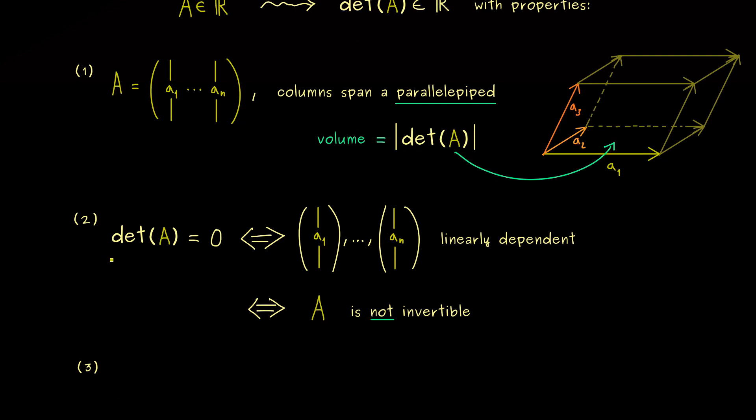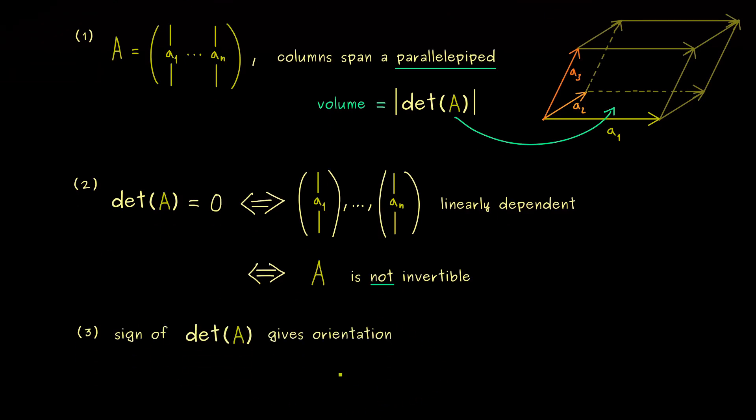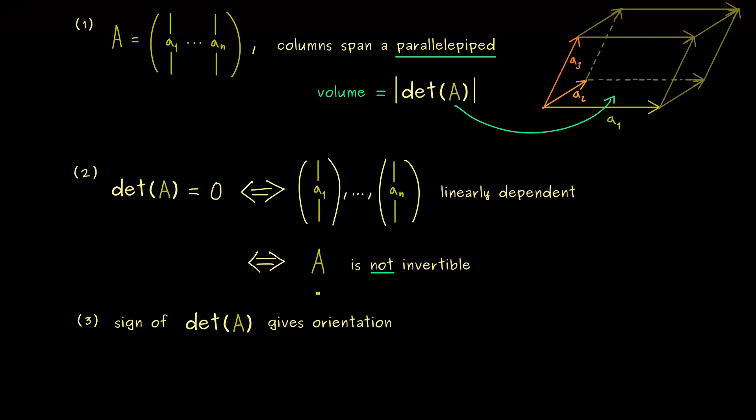The sign plus or minus of the determinant gives us an orientation. Now of course, there we have the question, what does it mean? What is an orientation of the corresponding vectors in the matrix?